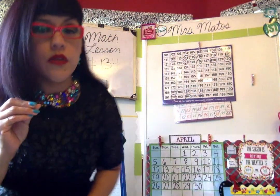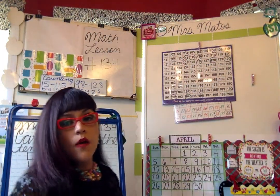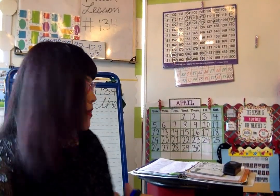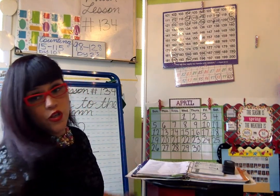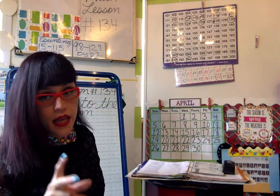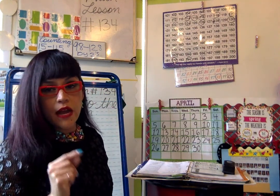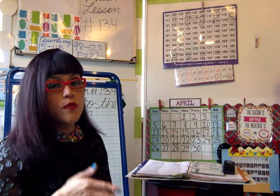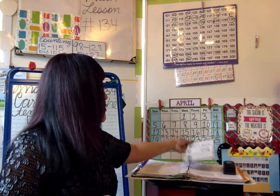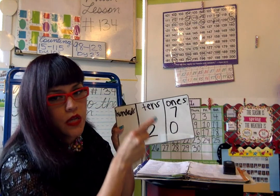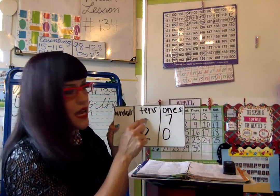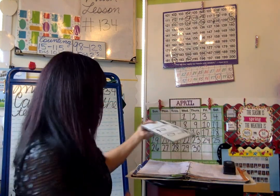Anytime you are adding numbers and the result is larger than 10 — show me 10 fingers — something's going to happen to your answer. You're not going to be able to place it all in the ones place. You're going to carry the other digit and place it in the tens place. You will see what that means in a second.